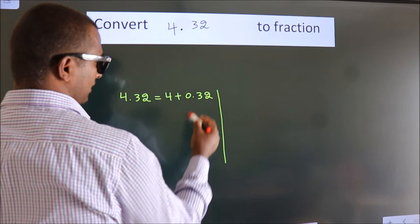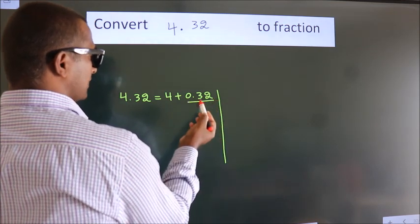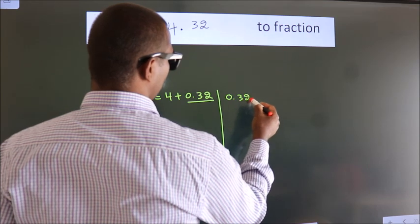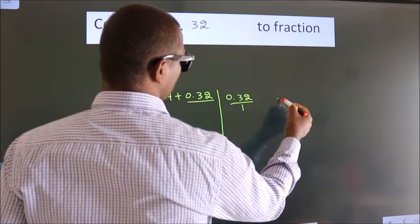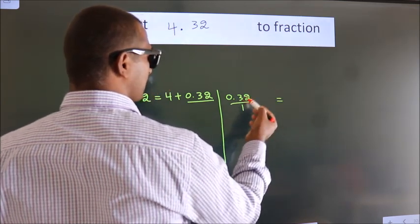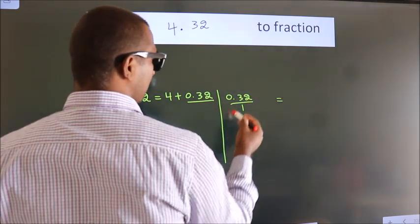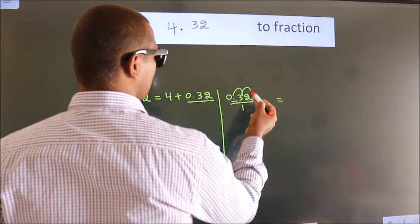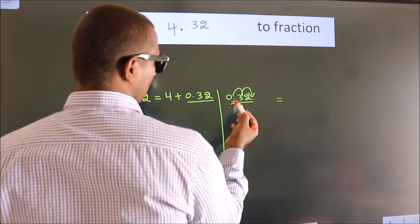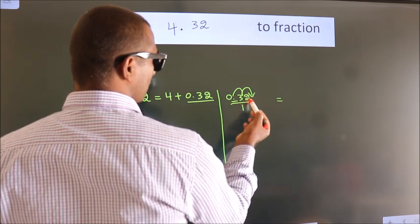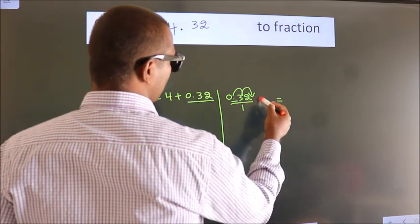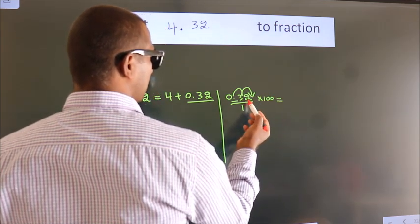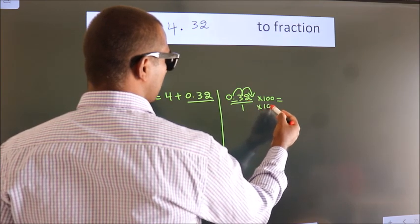Next convert this to fraction. To convert 0.32 to fraction, we have to move this decimal after 1, 2 numbers. To move this decimal after 2 numbers, multiply it with 100. Whatever you are multiplying in the numerator, in the denominator also do the same.